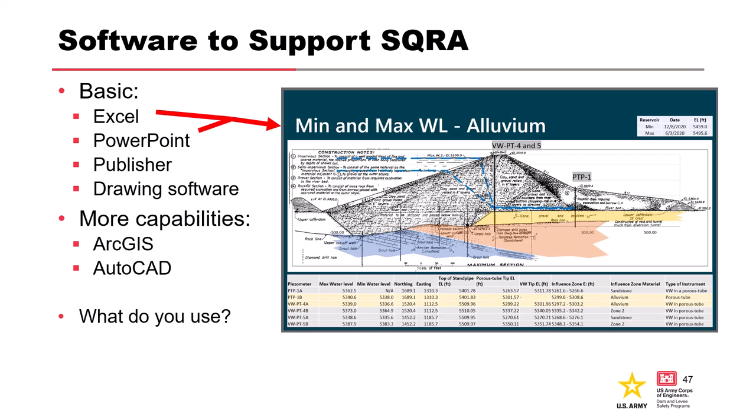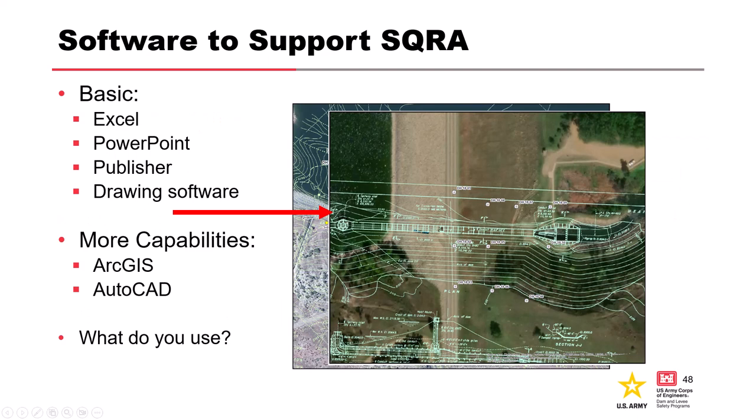We use a lot of basic tools: PowerPoint — I can do a lot in PowerPoint because I'm not an ArcGIS person — Excel, publisher drawing software, ArcGIS, and AutoCAD. What kind of software do you guys use for site characterization? OneNote came up for SQRAs — make sure you have a good internet connection. Rockworks is a good one. Google Earth — I love Google Earth. Micro Station — yes, we have to. Good to get accustomed to it.